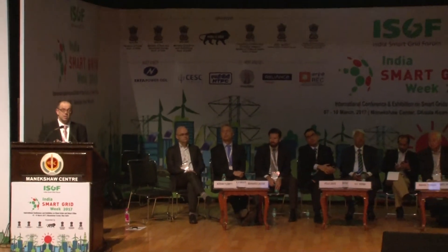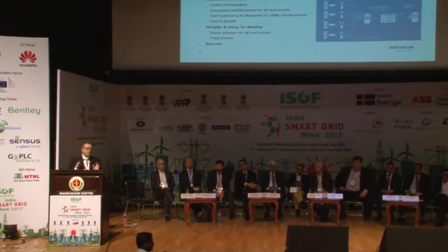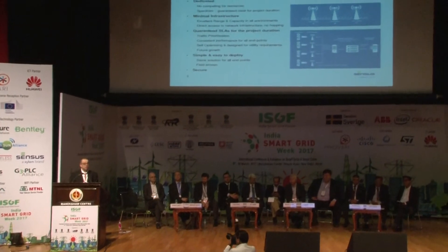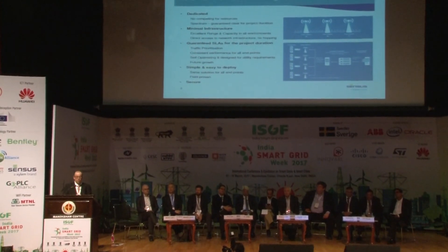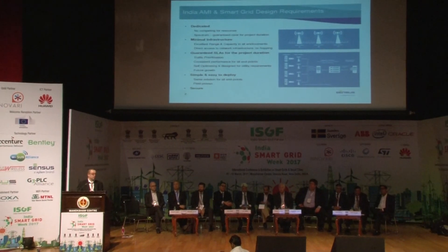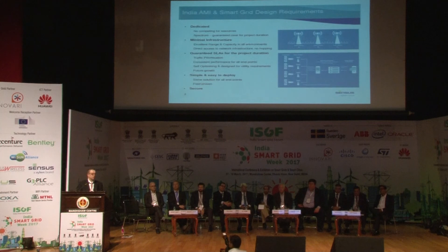What I'd like to first talk about is what we've learned over the last five, six, seven years in terms of the requirements really needed for a successful smart communication solution for AMI and distribution automation. Where possible, making a dedicated network is really something which gives a huge advantage — there's no competing for resources, and you can guarantee for the lifetime of the project that the resource you have today remains available. For us, that also means using dedicated radio spectrum, purely there for the use of the utility.